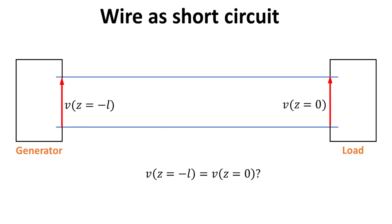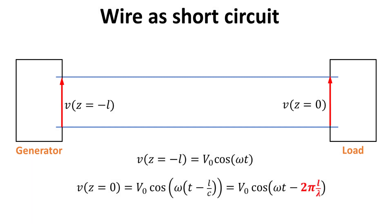Z equals minus L and zero denote the generator and load positions respectively. Certainly, the electrical signal has to take time to propagate from the generator to the load, so V(Z) at minus L should not be equal to V(Z) at zero. Electrical signals are electromagnetic waves, and they propagate with a finite speed of about 3 times 10 to the power of 8 meters per second in free space.